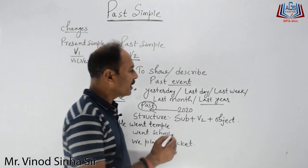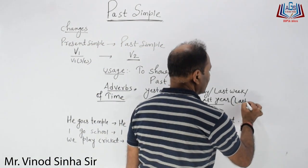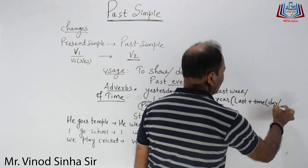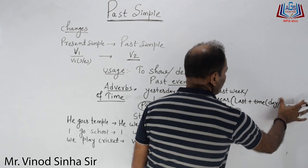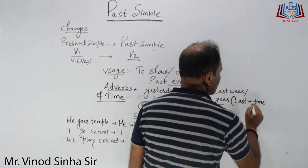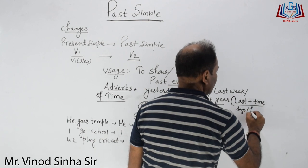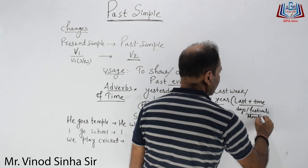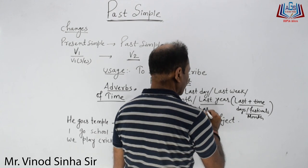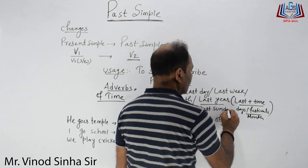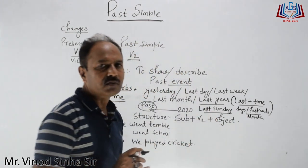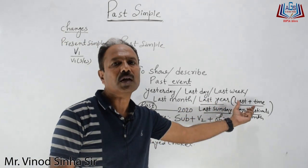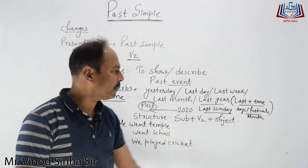Ek formula bana dete hain jo aapko aur clear kar dega: Last + time. Is time mein days bhi ho sakte hain, koi bhi festival ho sakta hai, months — kuch bhi. Toh agar mein likhu 'last Sunday' toh woh ghatna past ki ho gayi. 'Last Diwali' agar maan lo mein bol raha hoon, toh bhi woh past ki ghatna hogi. Iske andar past simple ka prayog hoga. Toh bas itna hi formula yaad rakhna: last + time — koi bhi time 'last' ke saath juda hua hai, aapka past simple ho gaya.